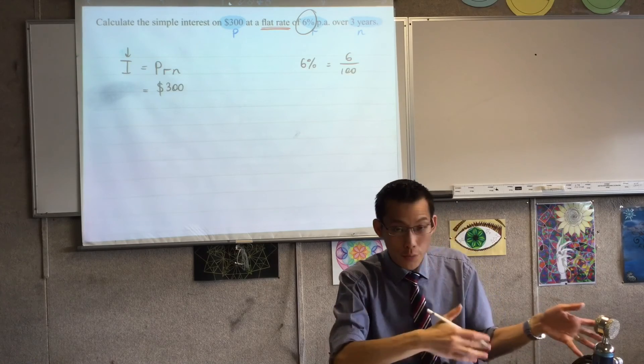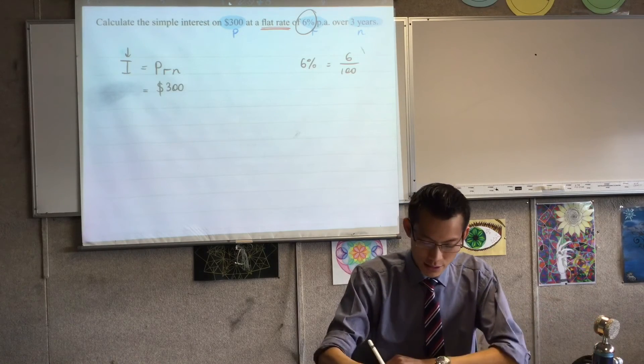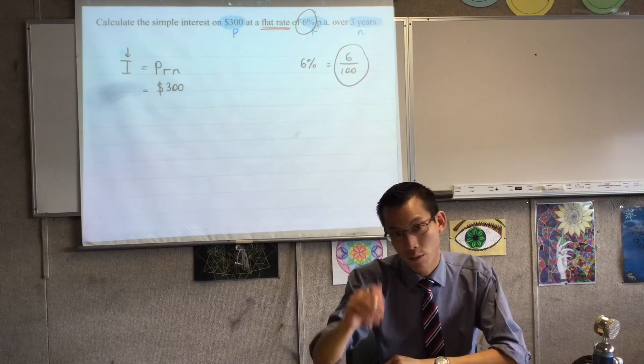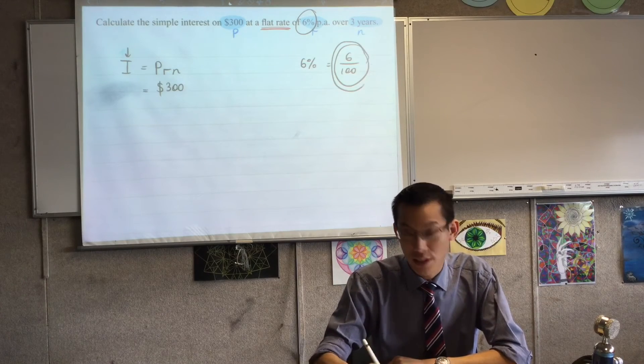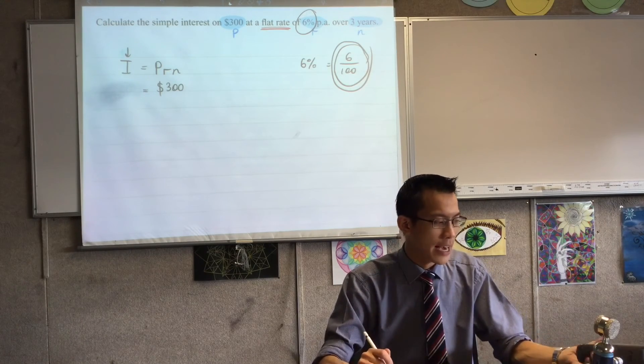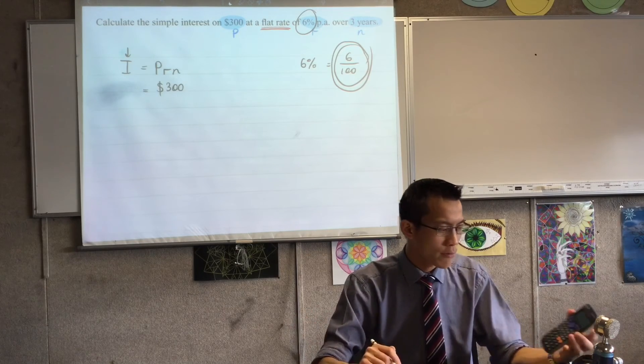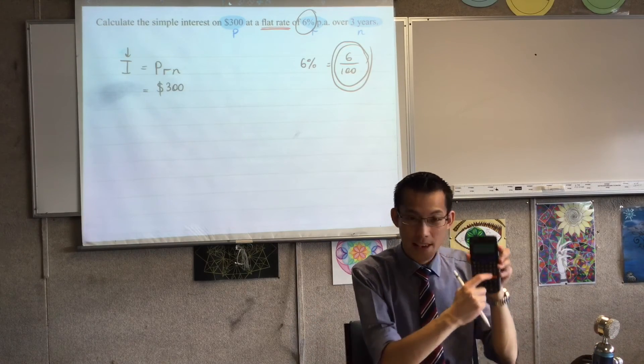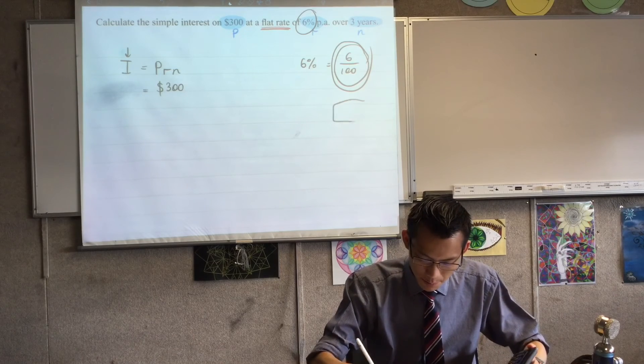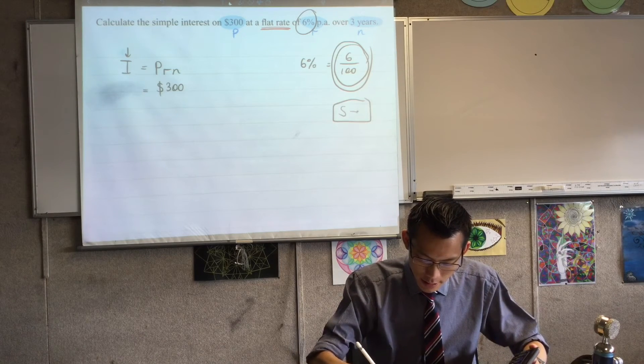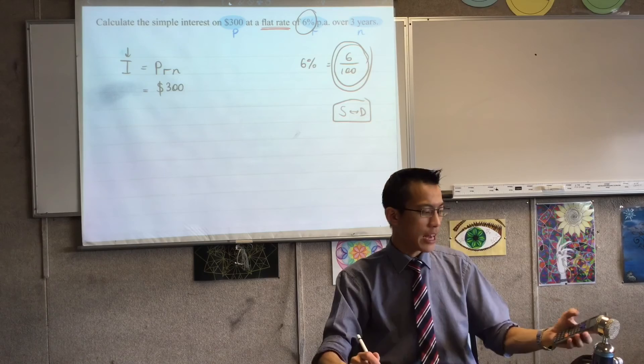Now when you reach for your calculator, if you type in 6 divided by 100 and press equals, it might just give you 6 divided by 100. If that's the case, it depends on how your calculator is configured and what kind of calculator you have. All you really need to do is look for the SD button. Looks like this: there's an S, a double-sided arrow, and a D.